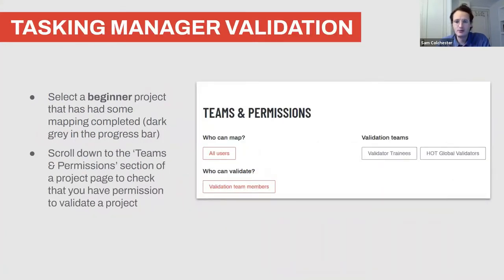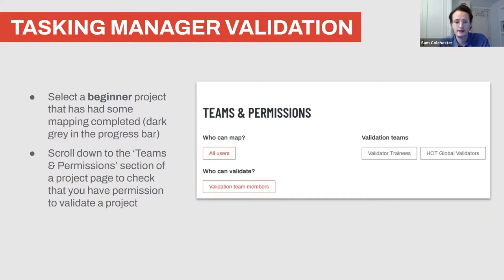Now, how to select a project. We've got a project to work on together. I highly recommend you don't jump straight into validation unless you've validated before. Instead, always map a few tasks first — that gives you an idea of what the actual mapping feels like.